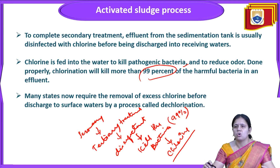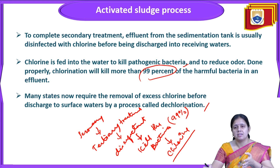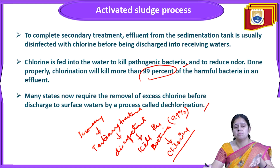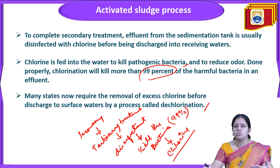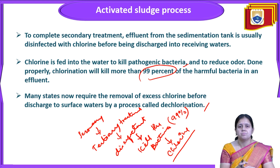Chlorine is going to kill 99% of the harmful bacteria in the effluent. Many states now require removal of excess chlorine before discharging to surface water by a process called dechlorination. When chlorine is added to the water to kill microbial activity, the chlorine percentage also increases in the water. To reduce or remove the excess chlorine before discharge to surface water is called dechlorination.